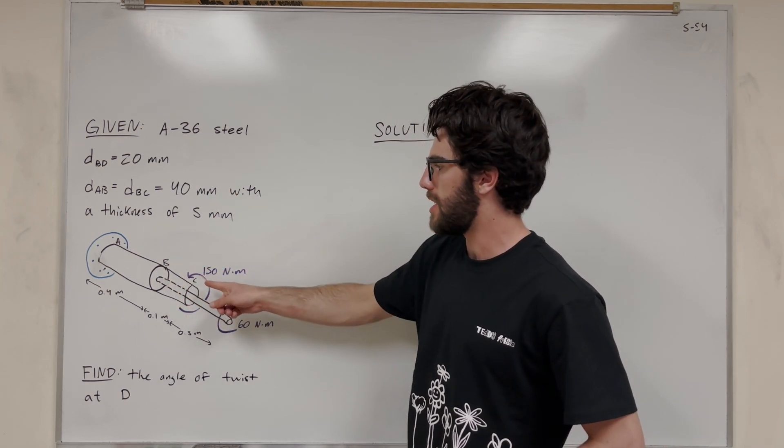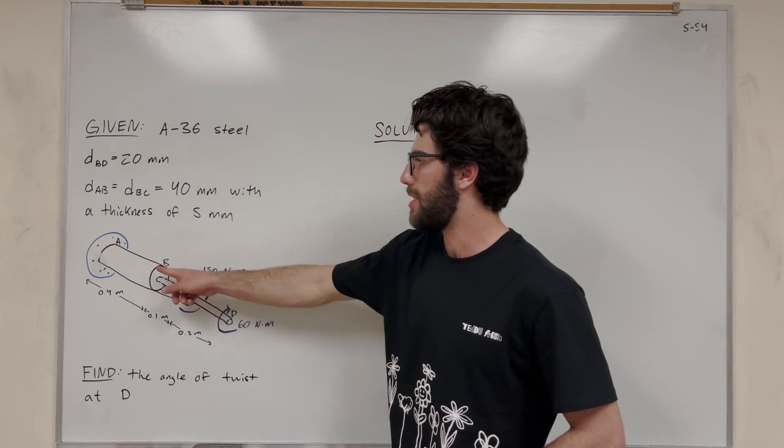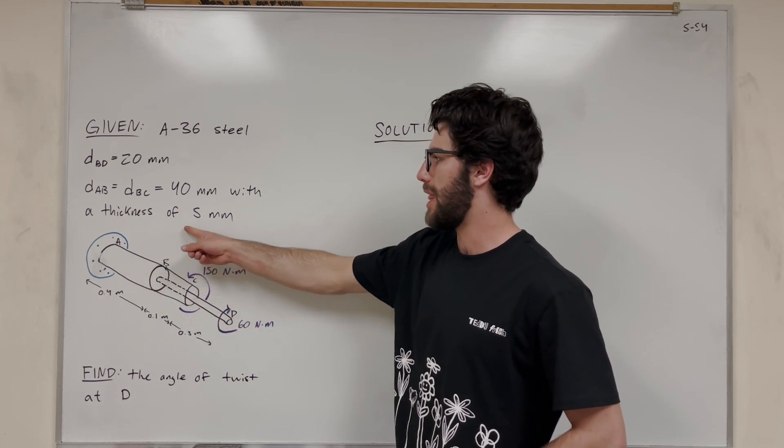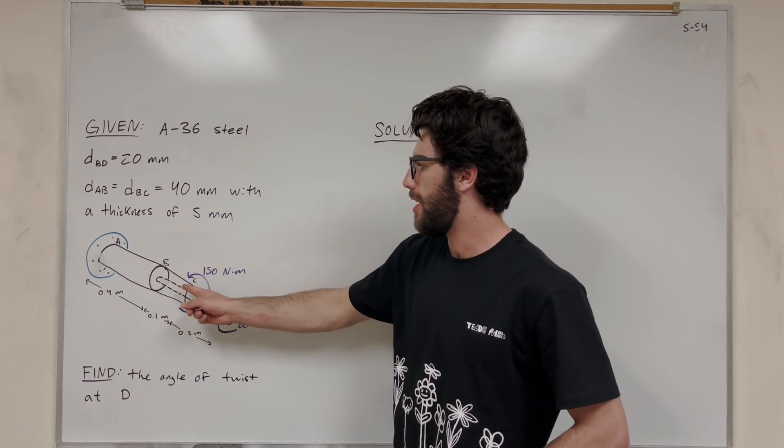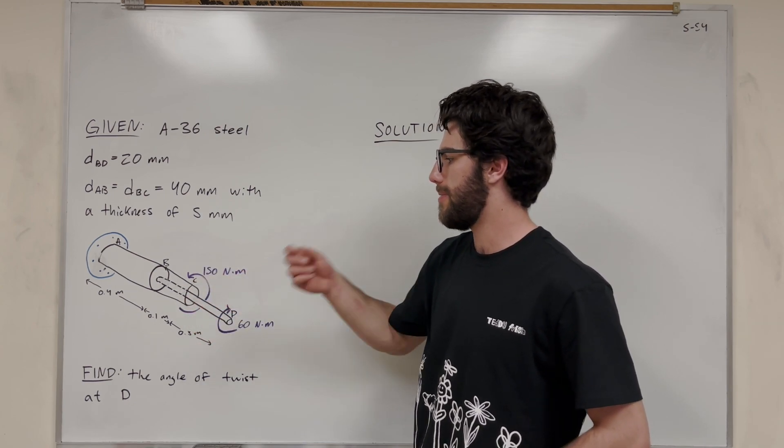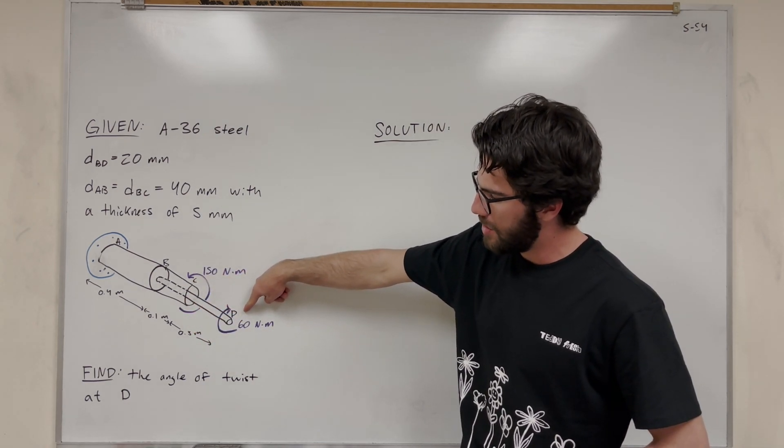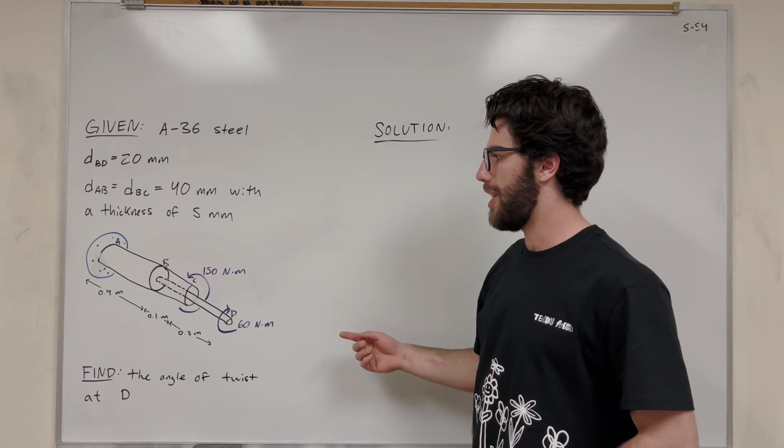But then also, from B to C, there's this hollow section with the same diameter and thickness as A to B, but it has a torque being applied to the end of it. So we want to find the angle of twist at D at the end of this rod here. Let's go ahead and solve for that.